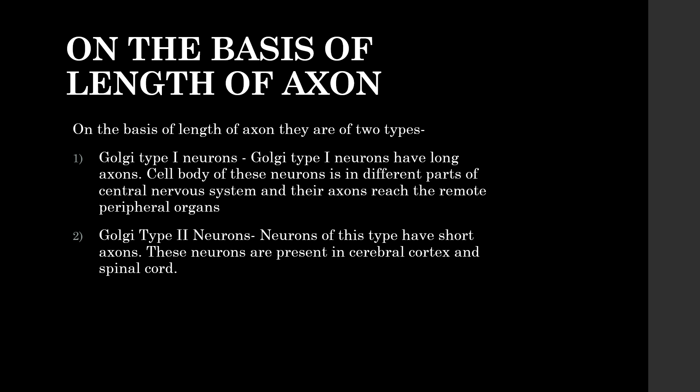On the basis of axon length, neurons are of two types. Golgi Type 1 neurons have long axons; the cell bodies of these neurons are in different parts of the central nervous system and their axons reach remote peripheral organs. Golgi Type 2 neurons have short axons and are present in the cerebral cortex and spinal cord.